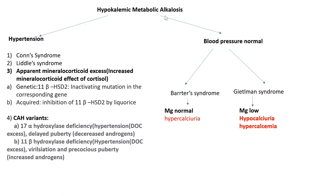Hypokalemic metabolic alkalosis with a normal blood pressure can be Bartter syndrome or Gitelman syndrome. How do we differentiate between the two? In Bartter syndrome, the magnesium is normal while there is hypercalciuria — the 24-hour urinary calcium is usually increased. In Gitelman syndrome, we have a low serum magnesium, and the 24-hour urinary calcium will be reduced — hypocalciuria — leading to accumulation of calcium in the blood.